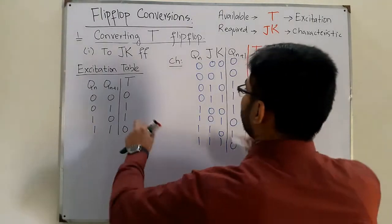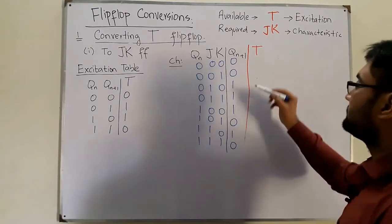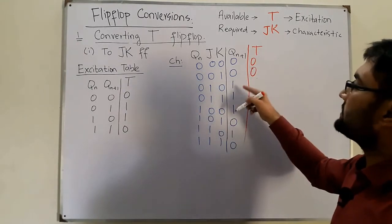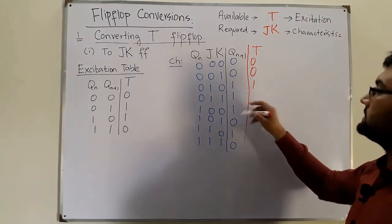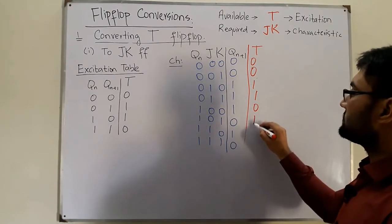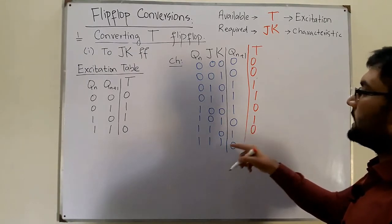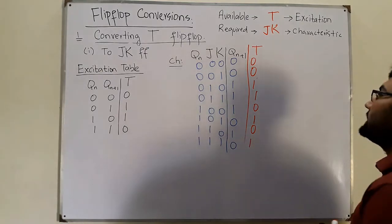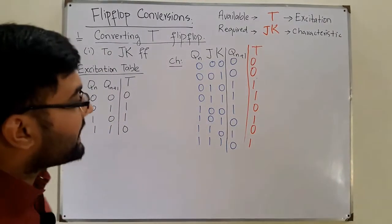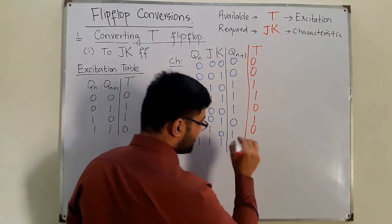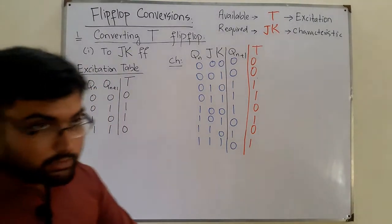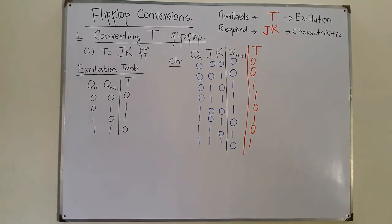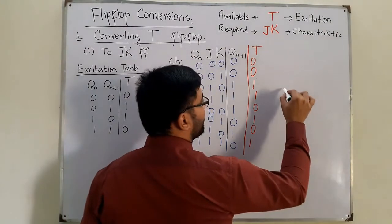Matching the states: for 0→0, T is 0; for 0→0 again, T is 0; for 0→1, T is 1; for 0→1, T is 1; for 1→1, T is 0; for 1→0, T is 1; for 1→1, T is 0; and for 1→0, T is 1. Now pause the video and try to solve it yourself before continuing.